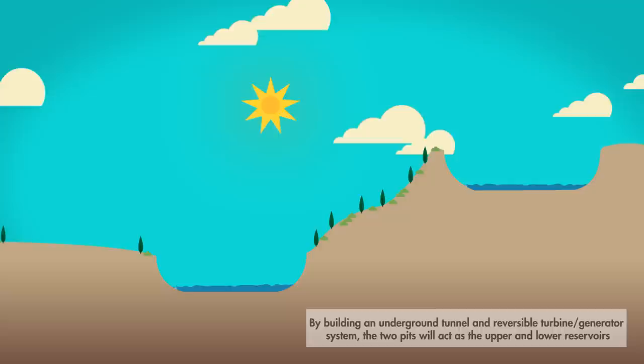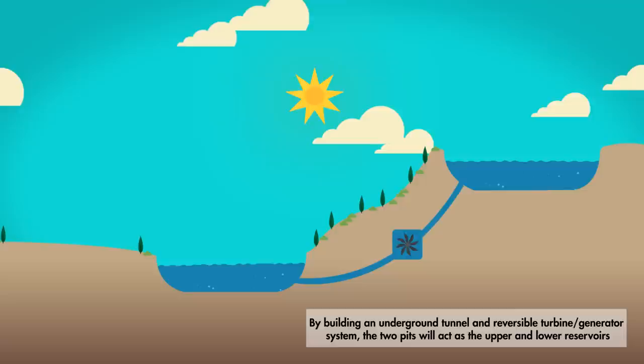By building an underground tunnel and reversible turbine generator system, the two pits will act as the upper and lower reservoirs.